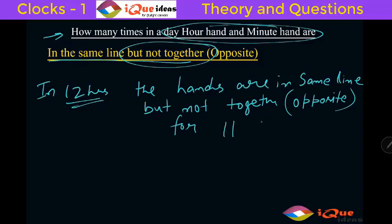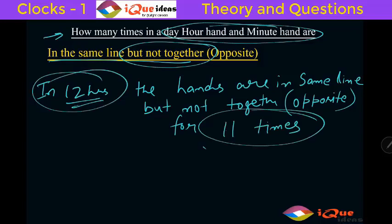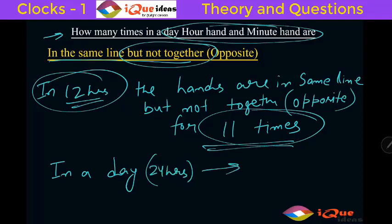For 11 times, again and again we have done that. So in 12 hours, 11 times. So in a day, which is always 24 hours - I hope you can simply do the calculation - 12 hours 11 times, 12 double 24, so 11 double that is 11 into 2 which is 22 times in a day.